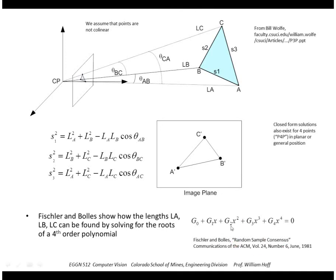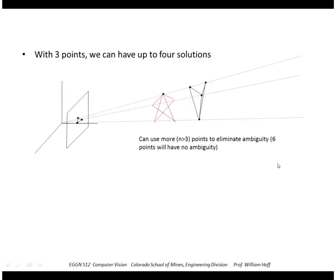Turns out there's also a closed-form solution for 4 points, called the P4P problem. One problem with 3 points is that there's ambiguity. The triangle that is the model can be reflected or shifted and give the exact same projection onto an image plane. There's up to 4 solutions for 3 points, so to resolve that ambiguity, we really need more than 3 points.